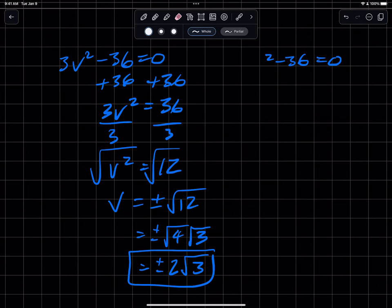We might recognize this as the difference of squares. Now, some might say it's not a difference of squares because 3 is not a perfect square. Meaning, if I had just v squared minus 36, that would be a difference of two squares because each of these terms is a perfect square.